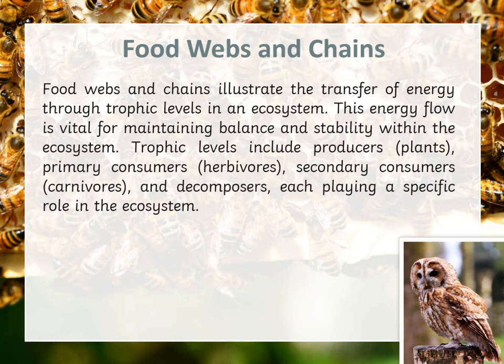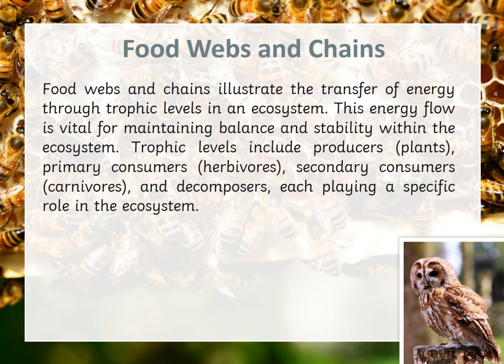Moving to another concept: food webs and chains. Food webs and chains illustrate the transfer of energy through trophic levels in an ecosystem. This energy flow is vital for maintaining balance and stability within the ecosystem. Trophic levels include producers, which are plants that receive their energy from the sun via photosynthesis, as discussed in unit 2. We then have primary consumers, which are the herbivores, and secondary consumers, which are the carnivores. Lastly, we have decomposers, each playing a specific role in the ecosystem.